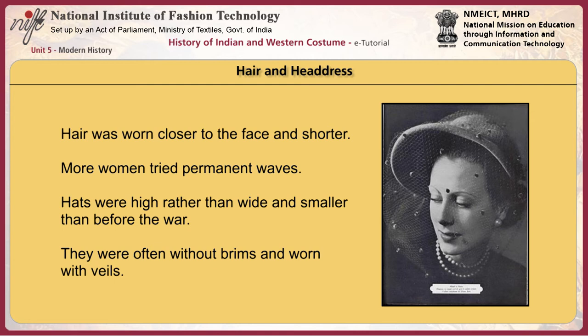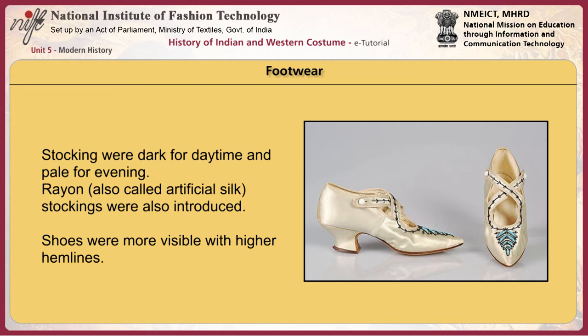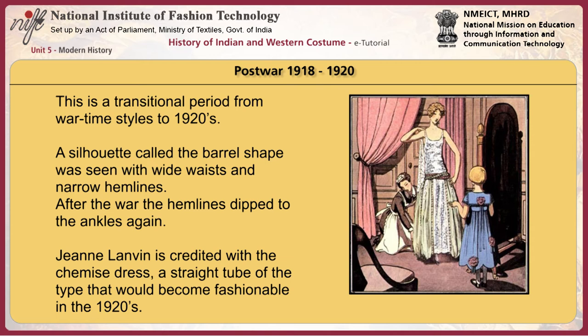Hair was worn closer to the face and shorter. More women tried permanent waves. Hats were high rather than wide and smaller than before the war, often without brims and worn with veils. For footwear, stockings were dark for daytime and pale for evening. Rayon, also called artificial silk, stockings were also introduced. Shoes were more visible with higher hemlines. After the First World War, there was a transitional period from wartime styles to the 1920s. A silhouette called the barrel shape was seen with wide waist and narrow hemlines. After the war, hemlines dipped to the ankles again. Jeanne Lanvin is credited with the chemise dress — a straight tube of the type that would become fashionable in the 1920s.